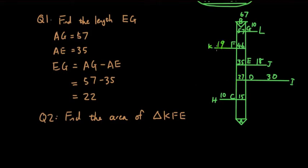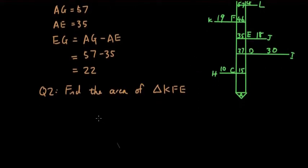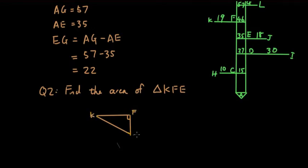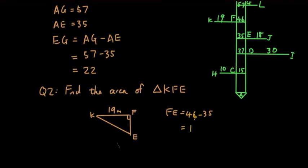Next question: find the area of the triangle KFE. This triangle goes from point K to point F to point E — it's a right angle triangle. KF is an offset, so it's at right angles to the survey line. The length from K to F is 19 meters, and the length from F to E is 46 minus 35, which equals 11 meters.